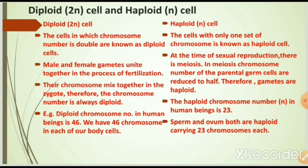Diploid 2n cells are cells in which the chromosome number is double. Male and female gametes unite in fertilization; chromosomes mix in the zygote, so the chromosome number is always diploid. The diploid chromosome number in humans is 46. Haploid n cells have only one set of chromosomes. During sexual reproduction, meiosis reduces the chromosome number of parental germ cells to half, so gametes are haploid. The haploid chromosome number n in humans is 23 — sperm and ovum both carry 23 chromosomes.